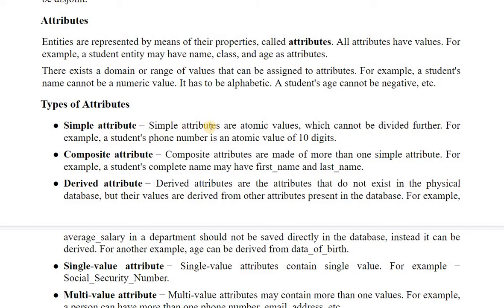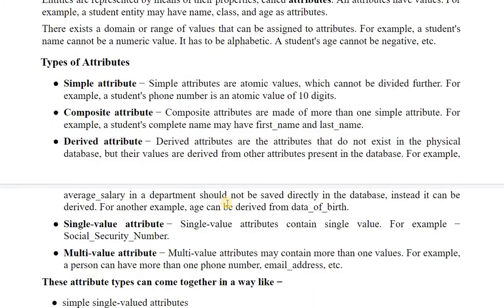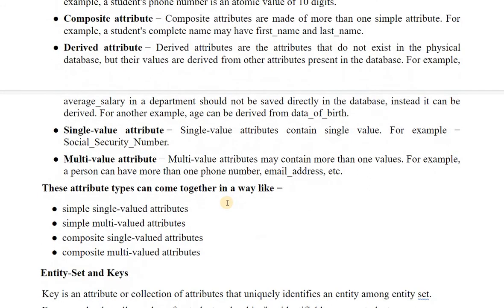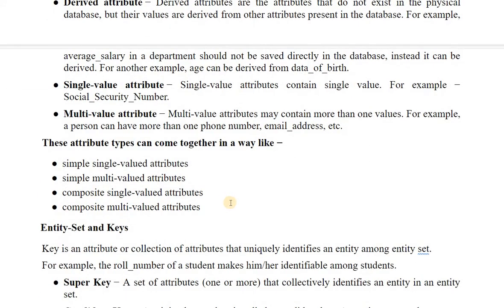There are different types of attributes: simple attributes, composite attributes, and derived attributes. Simple attributes are atomic values which cannot be divided further — for example, a student phone number is an atomic value of 10 digits. Composite attributes are made of more than one simple attribute — for example, a student's complete name has a first name and a last name, so it is a combination of two different attributes. Derived attributes do not exist in the physical database, but their values are derived from other attributes present in the database — for example, age can be derived from date of birth, or the average salary can be derived from the department.